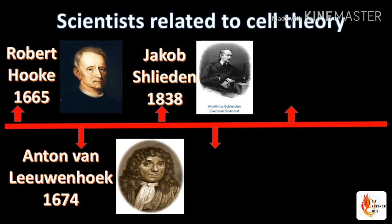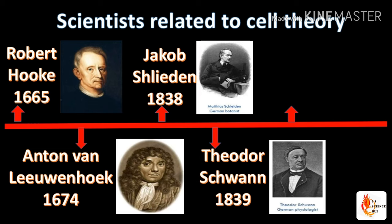The three scientists who made the cell theory are Matthias Schleiden, Theodore Schwann, and Rudolf Virchow. All three of these scientists came from Germany. Matthias Schleiden is a botanist, and by his experiments on plants he identified that plants are made up of a basic unit called cells.